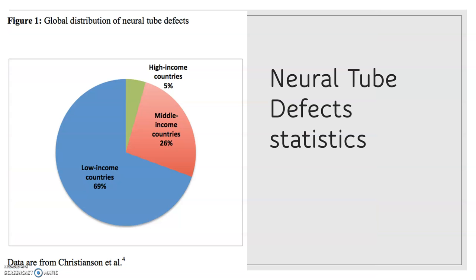This might surprise you, but in general, monitoring systems for neural tube defects have become more common in countries with lower income rates. Let's take a look at this diagram which shows the statistics of neural tube defects based on the country's income: middle income countries 26%, low income 69%, and high income 5%.